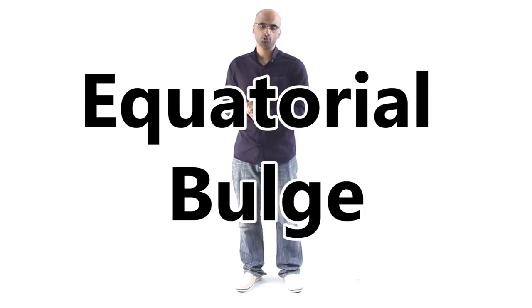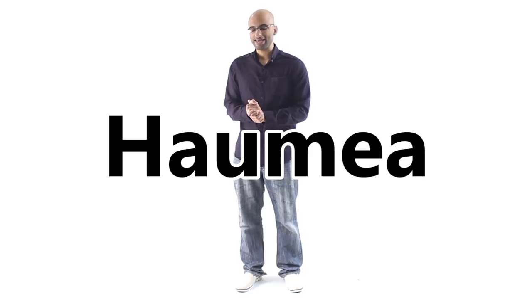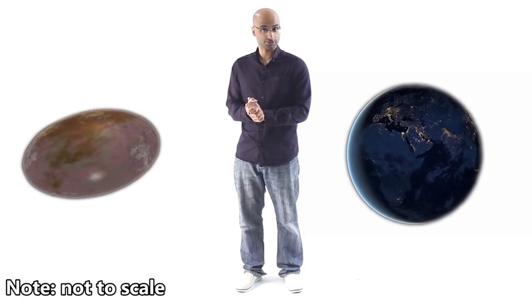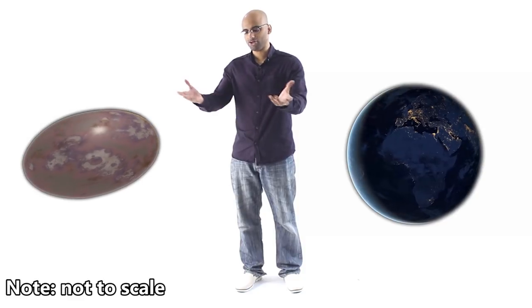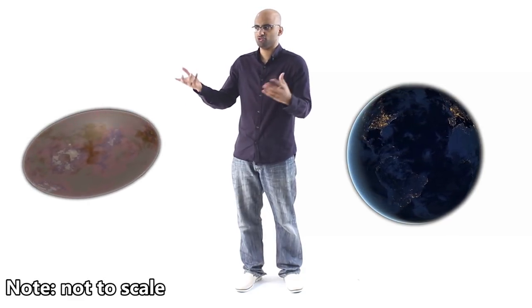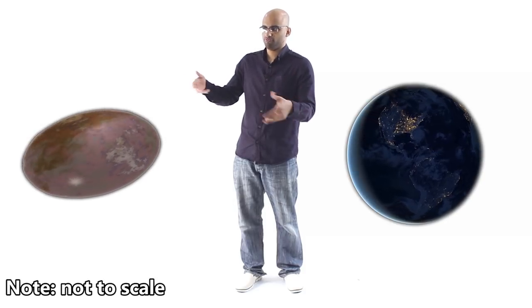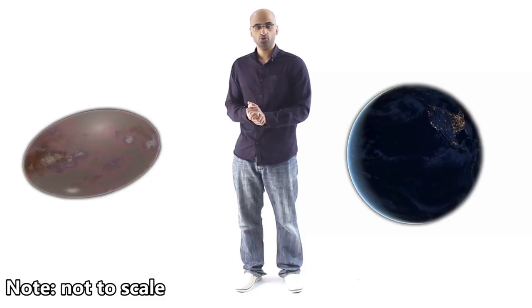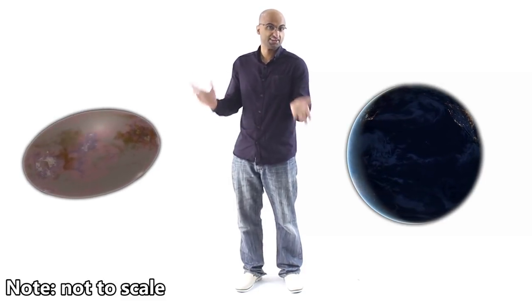The most extreme example we can find in our solar system comes in the form of the dwarf planet Haumea. It spins six times faster than Earth, and because it is less dense and less massive than Earth, it has elongated itself beyond recognition. It now looks like one of those footballs you've played with for like five years, and then left it in the basement for five more years. It's not a sphere anymore.